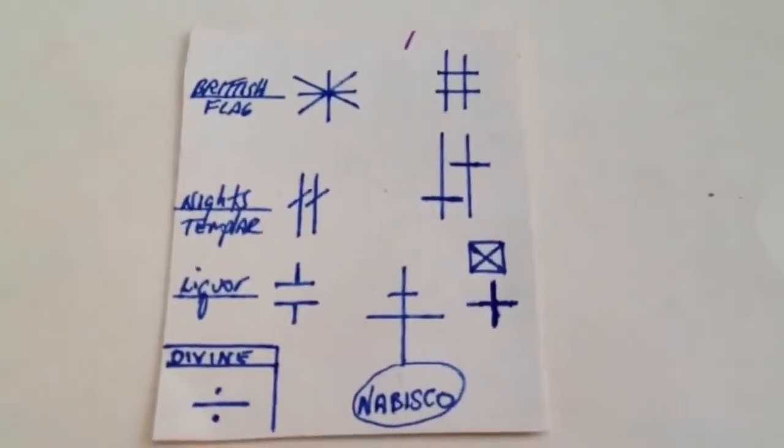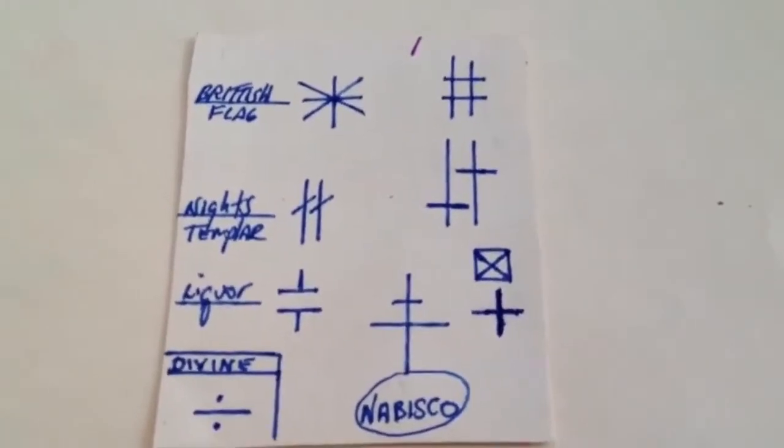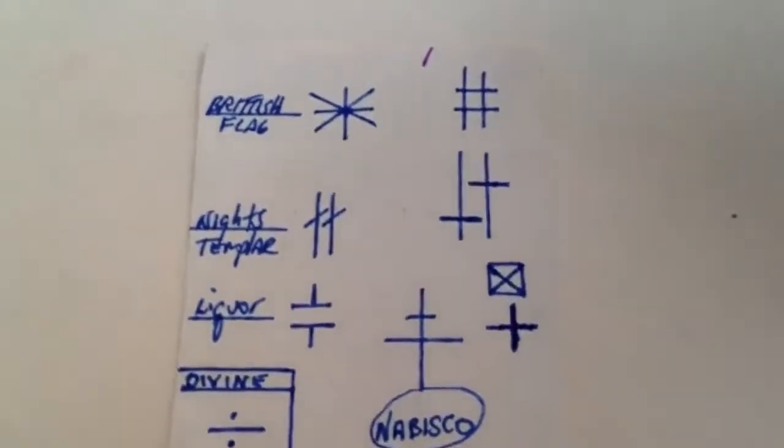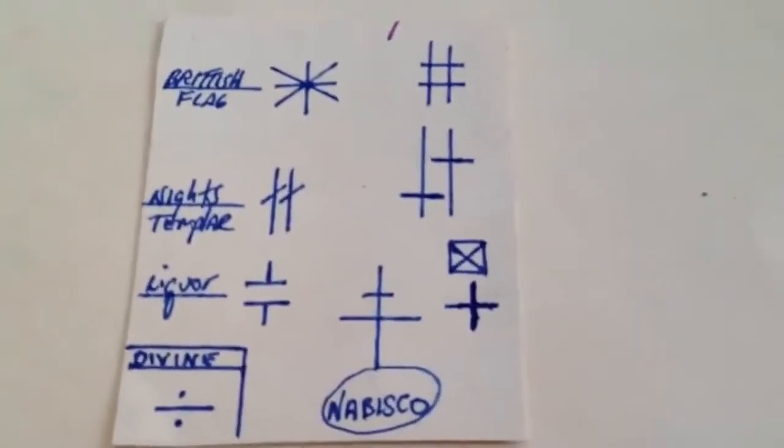The British crown owns America. America never actually declared independence from England. You were double-crossed. And you can't say you didn't know. It's right there on the flag that they double-crossed everybody.